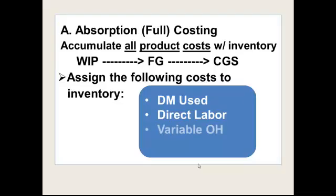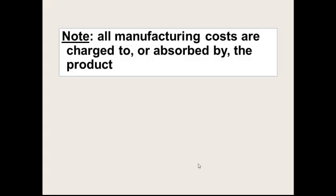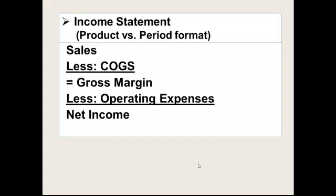Now we're going to break overhead down into two parts: variable overhead and fixed overhead. We still mean overhead applied — that's still what would be happening. Under absorption costing, you assign all product costs to inventory. It's called absorption costing because all manufacturing costs are absorbed by the product — sometimes it's called full costing. The income statement format is familiar: sales minus cost of goods sold gives you gross margin.